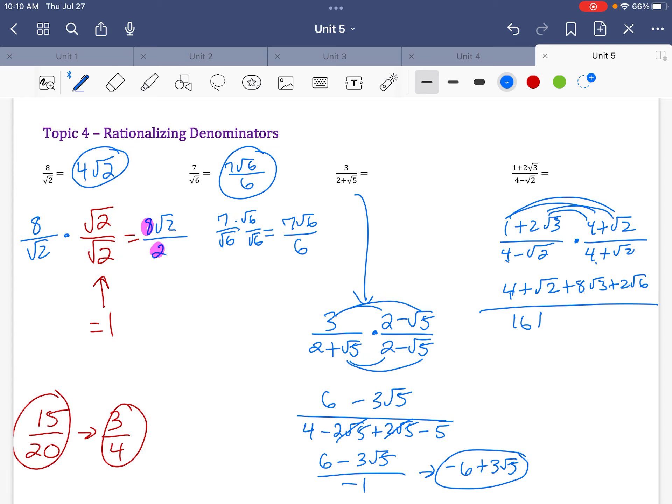But on the bottom, 4 times 4 is 16. 4 times radical 2 is plus 4 radical 2. The inside turns into minus 4 radical 2. And the last part turns into minus, and the 2 pops out. So look, these cancel. 16 minus 2 is 14.